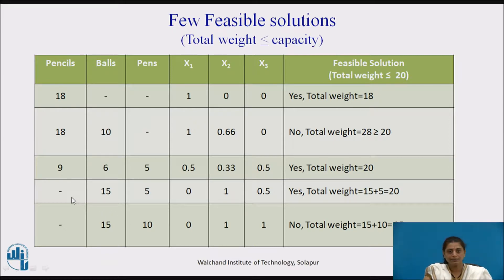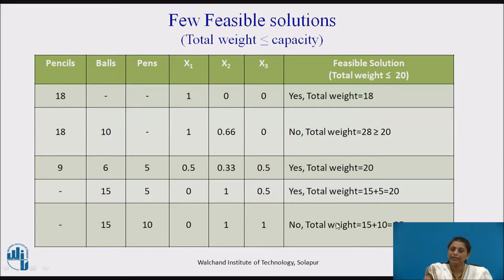In the third solution, we take 0.5 of the first object, 0.33 of the second, and 0.5 of the third. Total weight becomes 20 — yes, it is a feasible solution. In the fourth solution, we drop the first object, take the second completely, and take half the third, giving total weight 20. In the fifth solution, taking second and third completely gives weight 25, which is greater than 20. So solutions two and five are not feasible; solutions one, three, and four are feasible.